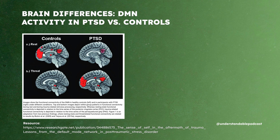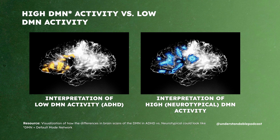Looking at the brain scans: row A shows the resting state in the control group — high activation of the default mode network. In PTSD, low activation at rest, but high activation under threat, while controls show low activation under threat. I recreated visualizations of these findings: on the left, the interpretation of low DMN activity in ADHD brains; on the right, the interpretation of high neurotypical DMN activity. That was the first major brain difference in people with ADHD.